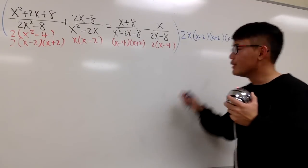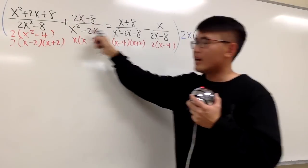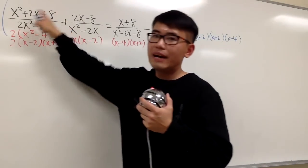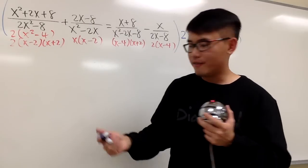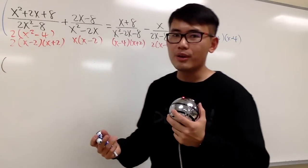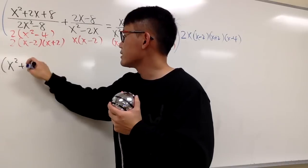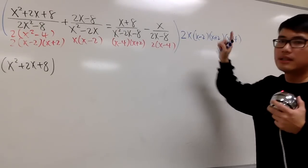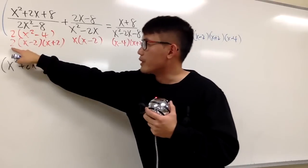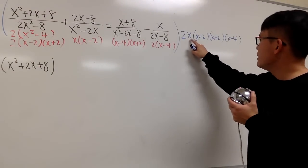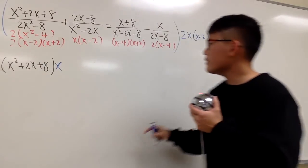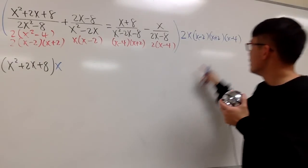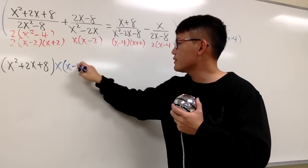And now, we just have to take this and multiply each every term. So let's see, when we do this times that, we know we are going to still have the top. So let me write that down first. I will put down x squared plus 2x plus 8. And now, you see that when I take this times the first term, the 2 will cancel. And this x will stay, so let me just put down the x right here. The (x minus 2) will cancel. The (x plus 2) will also cancel. And we also have to write down the (x minus 4) at the end. So this is the first term after we multiply by the LCD.